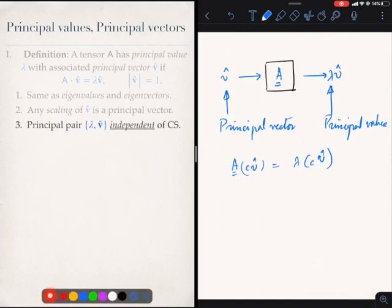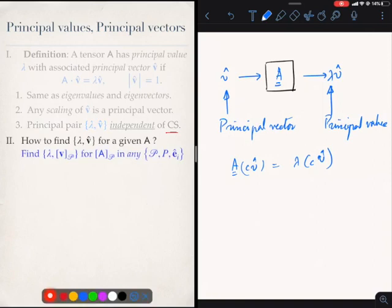I have done all this discussion of principal values and principal vectors and I have never once mentioned a coordinate system. That means the principal pair, which consists of a principal value and a principal vector, is independent of the coordinate system that you are working in. Now that is very important because it helps us answer the following question: How do you find the principal pair for a given tensor?